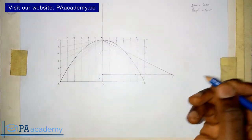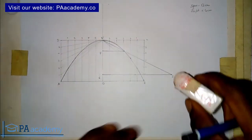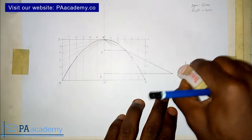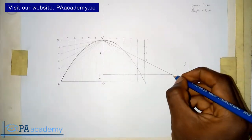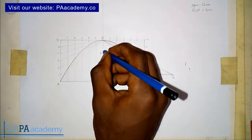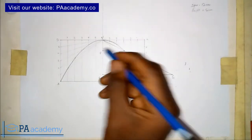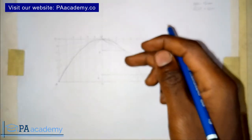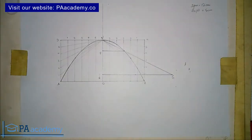Since we already have a point labeled F, let me rename that earlier point to G. So now this point on line VE is our focus, labeled F. This is how you find the focus of a parabola.